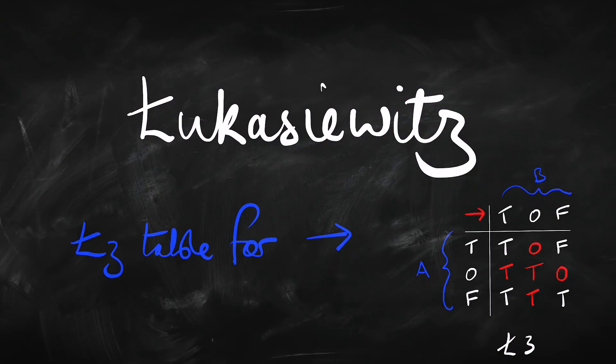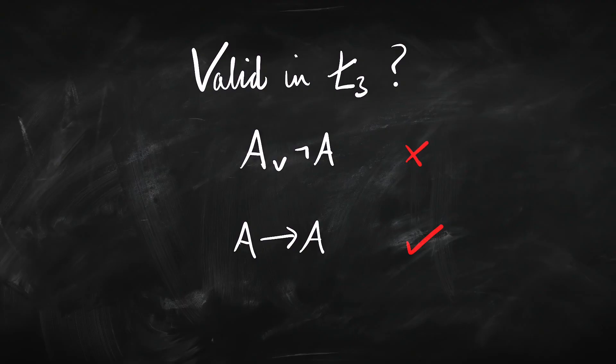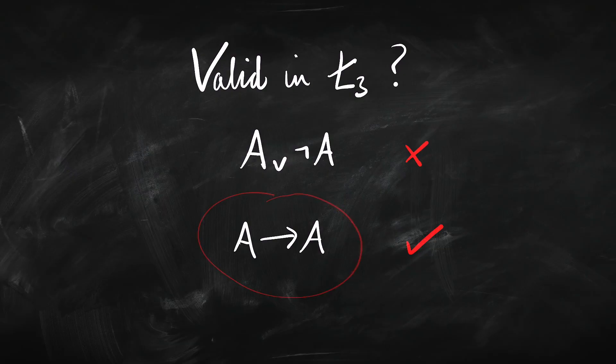What about Łukasiewicz three-valued logic? Here we take the same matrices for negation and or, but we change the matrix for implication to the Łukasiewicz table — the one where we put a T right in the middle value. So now when we've got A→A, that is guaranteed to be true: if A is false it's true, if A is true it's true, and if A is 'other' we've got O→O, which in the Łukasiewicz case is true. So A→A is valid in Łukasiewicz logic.